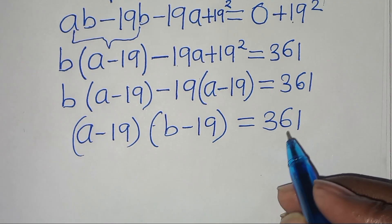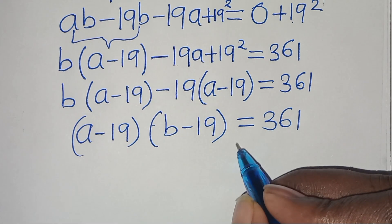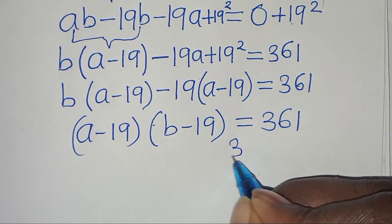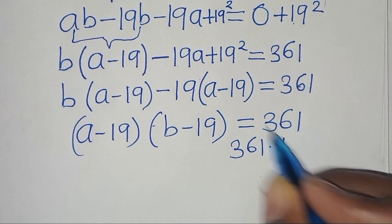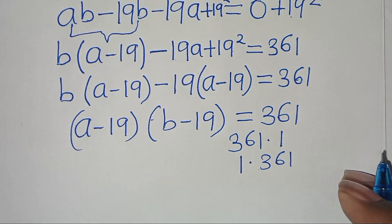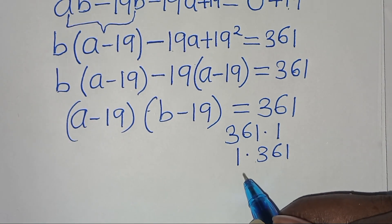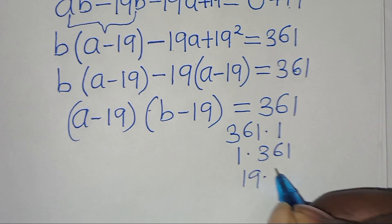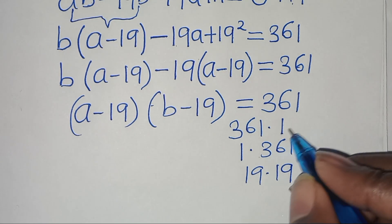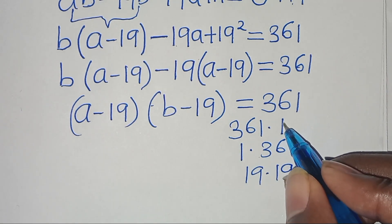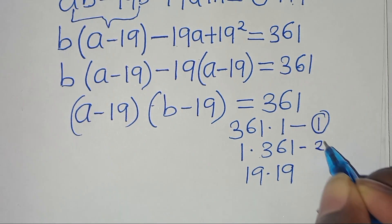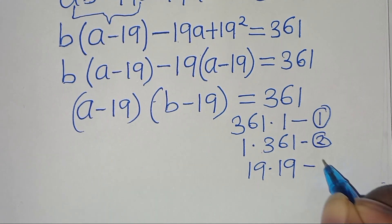The next step is to find the prime factors of 361. We have: 361 times 1 equals 361 (Case 1), 1 times 361 equals 361 (Case 2), and 19 times 19 equals 361 (Case 3).